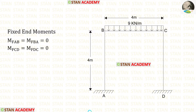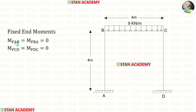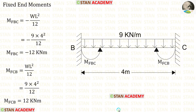Now let us find the fixed end moments. In the columns AB and CD, there are no loads, so the fixed end moments M_AB, M_BA, M_CD, and M_DC are 0. Now let us find the fixed end moments in the beam BC. In the beam BC, there is a UDL of 9 kN per meter acting for the full span.